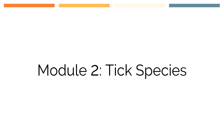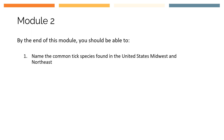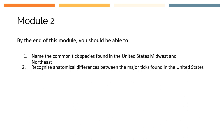Welcome to module 2. In this module we'll explore the tick species found across the Midwest and the Northeast. By the end of this module you should be able to name the common tick species found in the United States Midwest and Northeast, recognize anatomical differences between the major tick species found in the United States, and identify a tick based on an image.